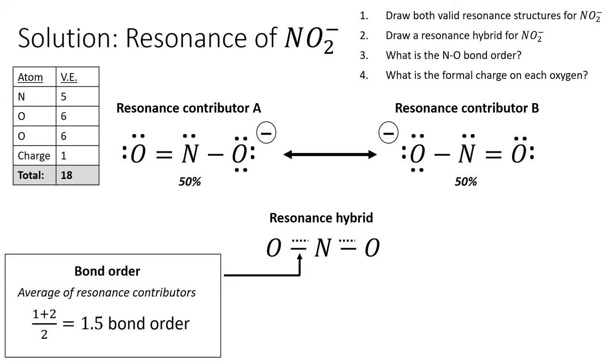Next, to calculate the bond order, we take the average of the bond orders of each resonance structure. For the first bond, resonance structure A has a double bond, and structure B has a single bond. The average between a double bond and a single bond is a one-and-a-half bond. That is correct. Bond orders can be fractional.